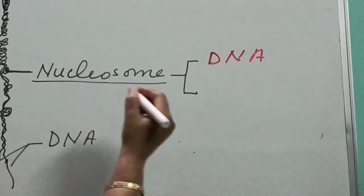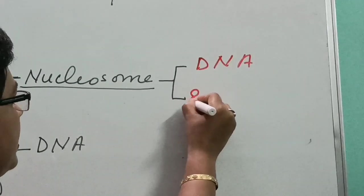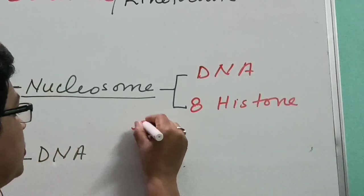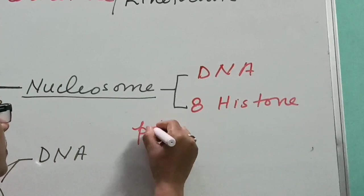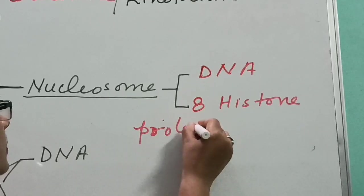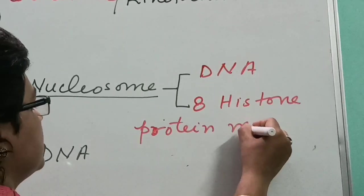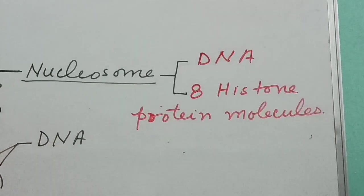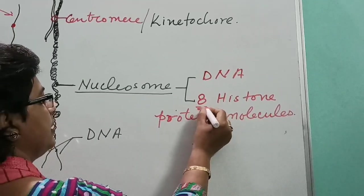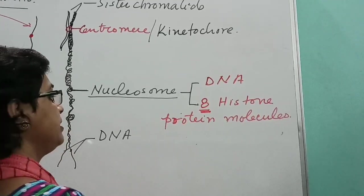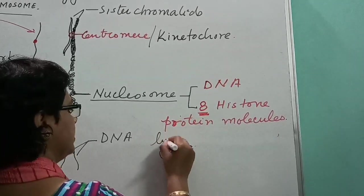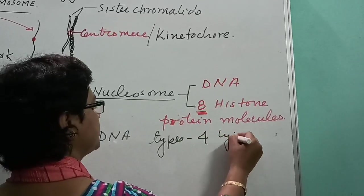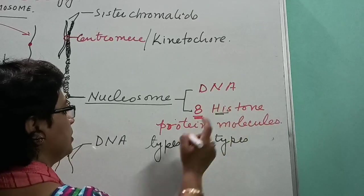And inside this rounded body, eight histone protein molecules are present. In number they are eight, but in types they are four. That means four types of histone molecules.